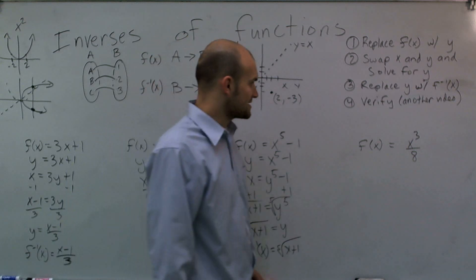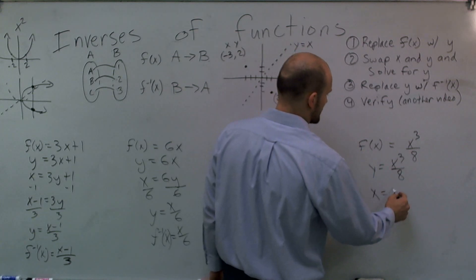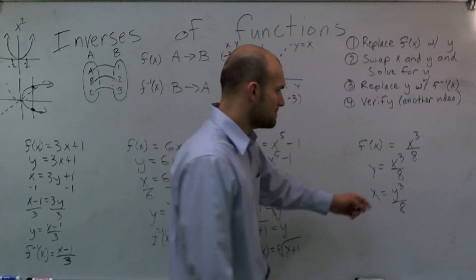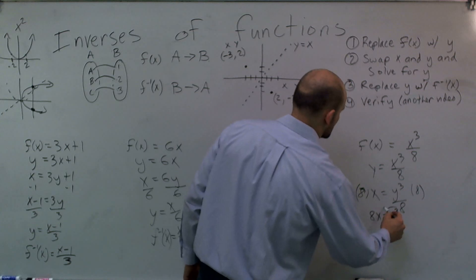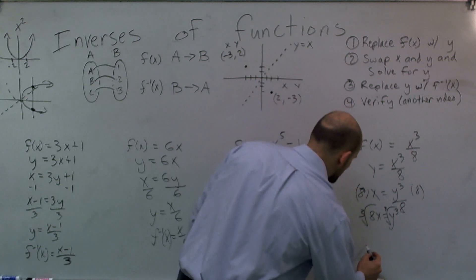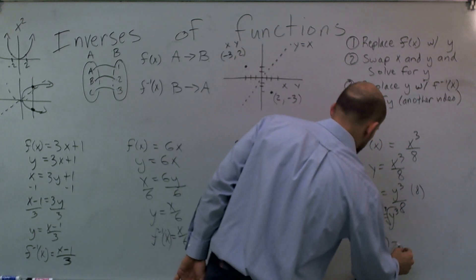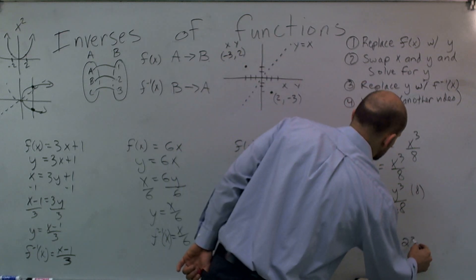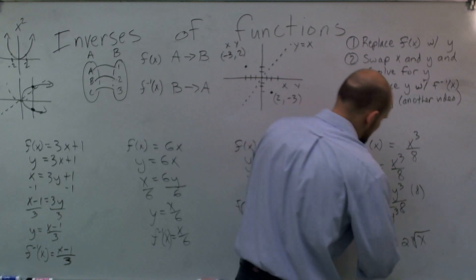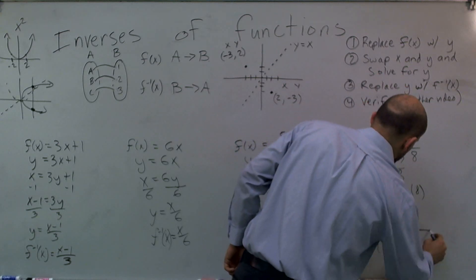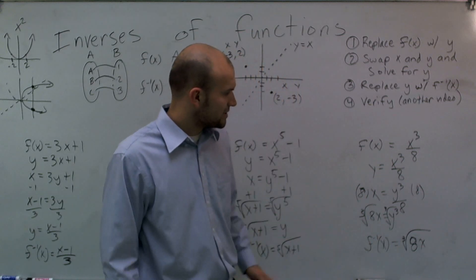Lastly, we have f(x) = x³ / 8. Write y = x³ / 8, then swap x and y's: x = y³ / 8. Multiply by 8 on both sides: 8x = y³. Take the cube root: cube root of 8x equals y. Since the cube root of 8 is 2, f inverse of x equals 2 times the cube root of x, or the cube root of 8x.